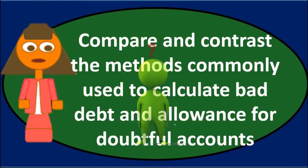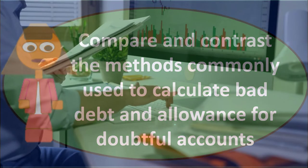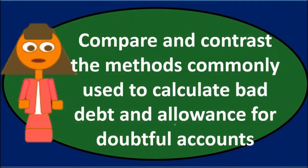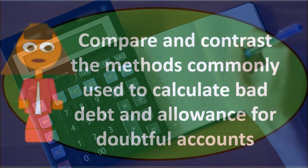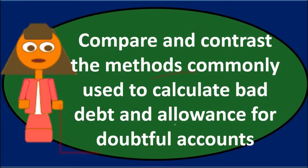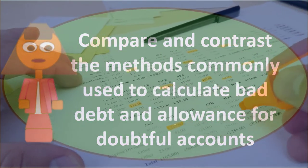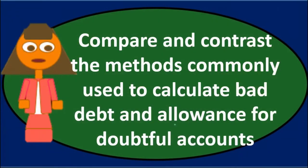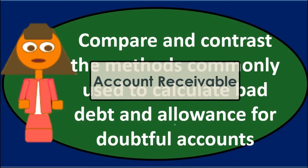If you think about fixing the accounts receivable overstatement, you are taking a balance sheet approach. But as you fix the balance sheet, the income statement also gets corrected, because the other side of the journal entry flows to the income statement. Making the balance sheet more accurate typically makes the income statement more accurate as well.